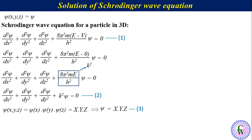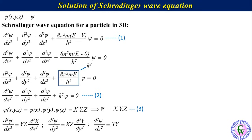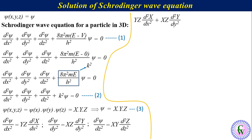Differentiating equation 3 partially in different cases gives: d²psi/dx² equals Y·Z times d²X/dx²; d²psi/dy² equals X·Z times d²Y/dy²; and d²psi/dz² equals X·Y times d²Z/dz². Putting these values in equation 2 gives: Y·Z·(d²X/dx²) plus X·Z·(d²Y/dy²) plus X·Y·(d²Z/dz²) plus k²·X·Y·Z equals zero.